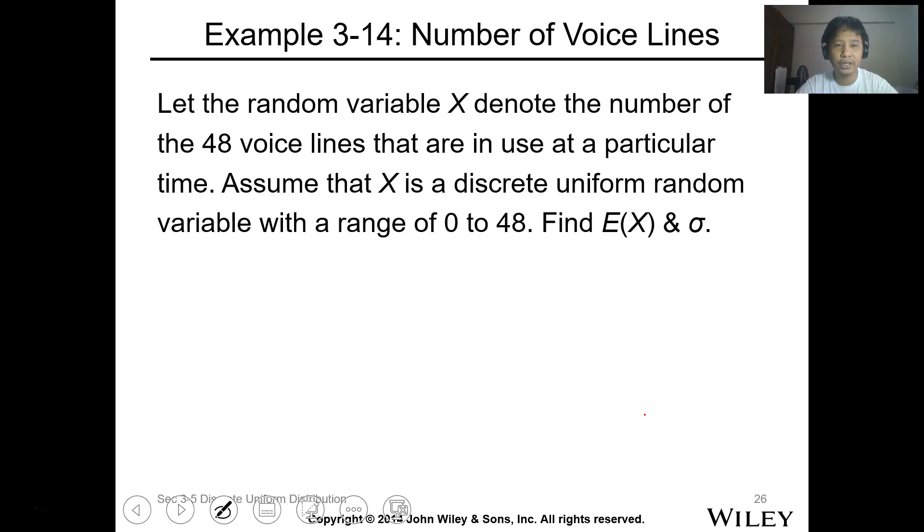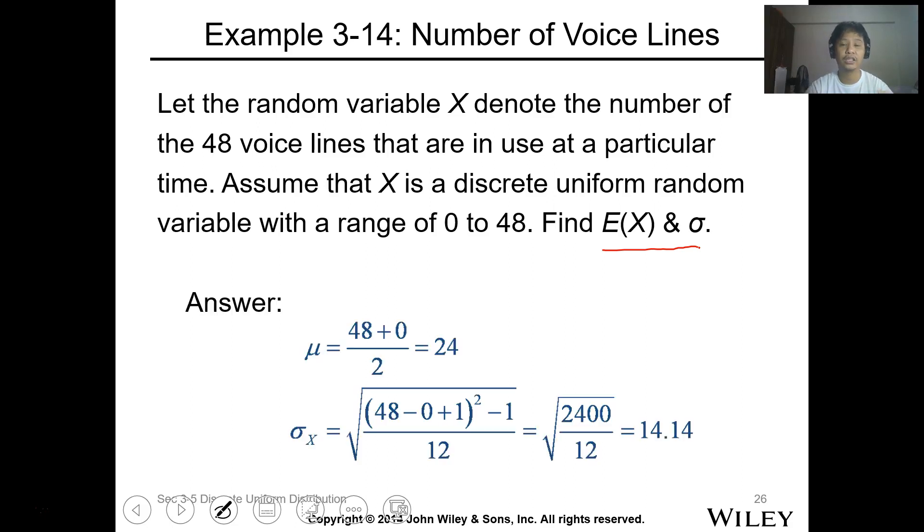The number of values or items will be b minus (a minus 1), or we can have b minus a plus 1 values in the inclusive interval. Therefore, your f(x) will be 1 over (b minus a plus 1). The mean value or expected value of X will be (b plus a) over 2, and the variance will be ((b minus a plus 1) squared minus 1) all over 12. Note that your b plus a is divided by 2.